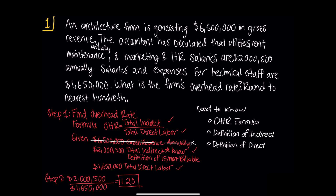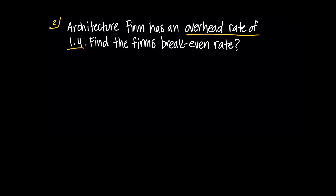Another way the overhead rate problem may show up is in the following question. Number two: an architecture firm has an overhead rate of 1.4. Find the firm's break-even rate. This brings us to our next tip: learn and apply the formulas with the units correctly. The formulas are not provided on these types of exam questions, so study the formulas well.